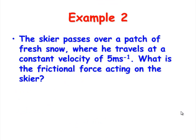The skier continues skiing down the slope, passes over a fresh patch of snow. He travels at a constant velocity of 5 meters per second. Here's that key word, highlight it, circle it, do what you need to do. What's the frictional force acting on the skier?